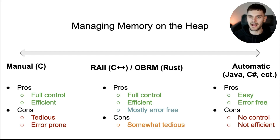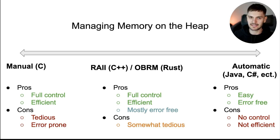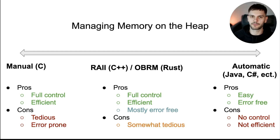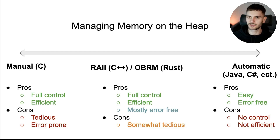On the other extreme, you have automatic memory management, also known as garbage collection, where memory is allocated and deallocated automatically. You can think about this as a little program running inside your program that cleans up memory for you. Examples of garbage collected languages are Java, C#, JavaScript, Python, etc.